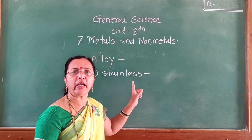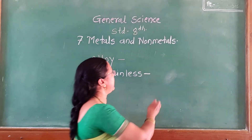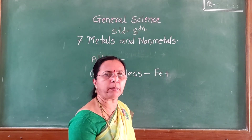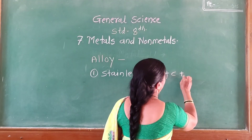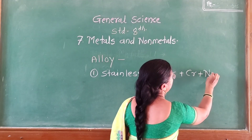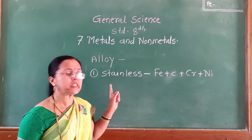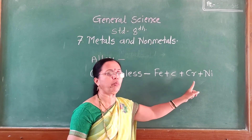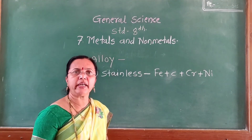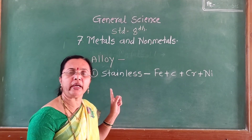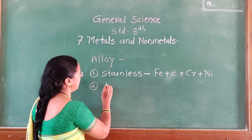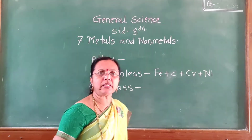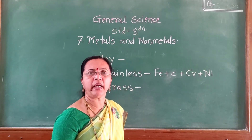Stainless steel alloy is made from iron, carbon, chromium and nickel. The next example of an alloy is brass. Brass is made from copper and zinc.